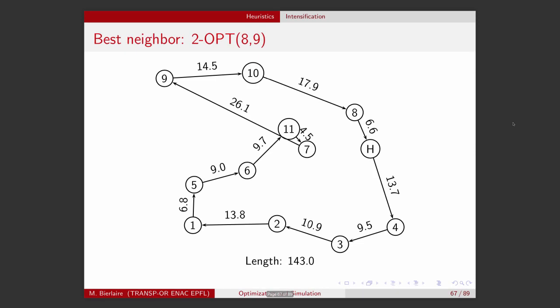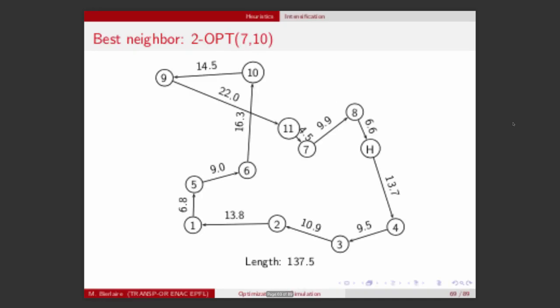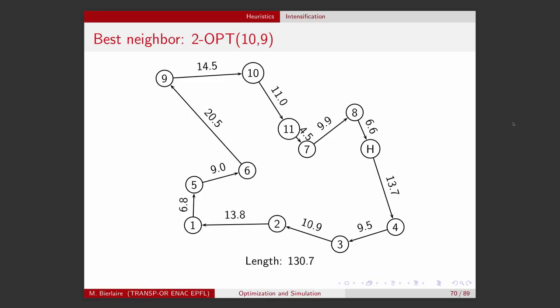Let's continue. We have a new tour obtained by swapping eight and nine, to get a length of 143. Then we swap eleven and seven, to obtain a length of 139.5. Then ten and nine, to get a length of 130.7. Now, starting from this solution, all possible 2-opt transformations produce a longer tour. Therefore, this is a local optimum for this neighborhood structure.